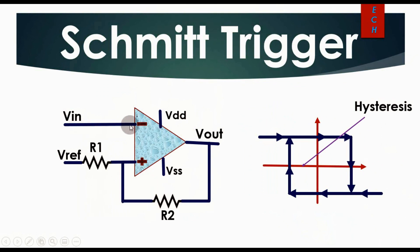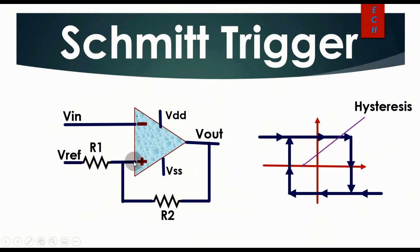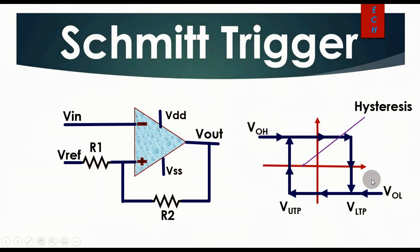Since the input signal is connected at the inverting terminal, that is why it is called an inverting type Schmitt trigger. If your input signal is connected to the non-inverting terminal, that is called a non-inverting type Schmitt trigger. Here we will discuss the inverting type. The reference signal is connected at the non-inverting terminal. This is the pictorial representation showing V_OH (output high), V_OL (output low), the upper trip point, and the lower trip point.